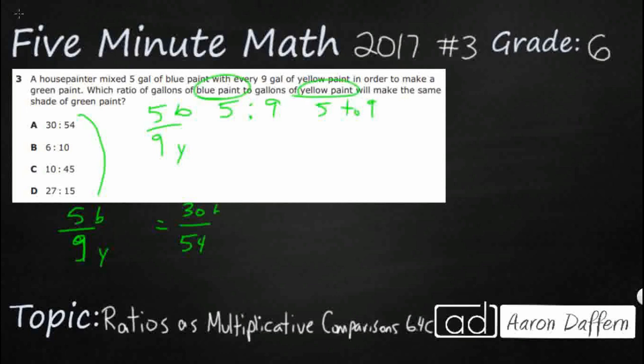And let's just think, can we make this an equivalent fraction by multiplying? So 5 times 6 is going to make 30. 9 times 6, that makes 54. So it looks like right off the bat, that might be it. Let's just double check to make sure that we've got it, though.